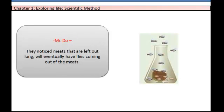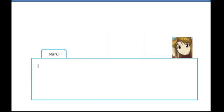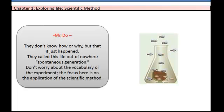They noticed meats that were left out long would eventually have flies coming out of the meat. They didn't know how or why, but that it just happened. They called this life out of nowhere, Spontaneous Generation.